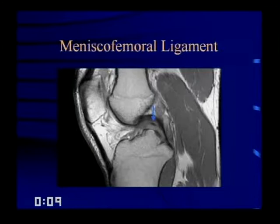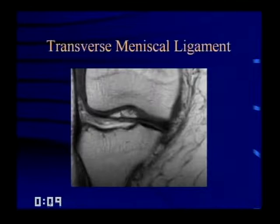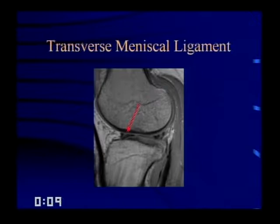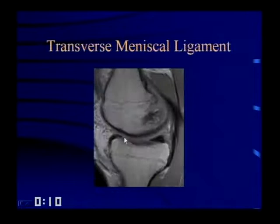The transverse meniscal ligament attaches the anterior horns of the lateral and medial meniscus in about 40% of patients. Its attachment to the anterior horn of the lateral meniscus may simulate a tear — rarely a problem on the medial side. Here's a nice example: this person does have a longitudinal tear, but there's also something at the anterior horn that might look like a tear. Following that little dot, you see it's really just the transverse meniscal ligament inserting into the anterior horn of the medial meniscus.